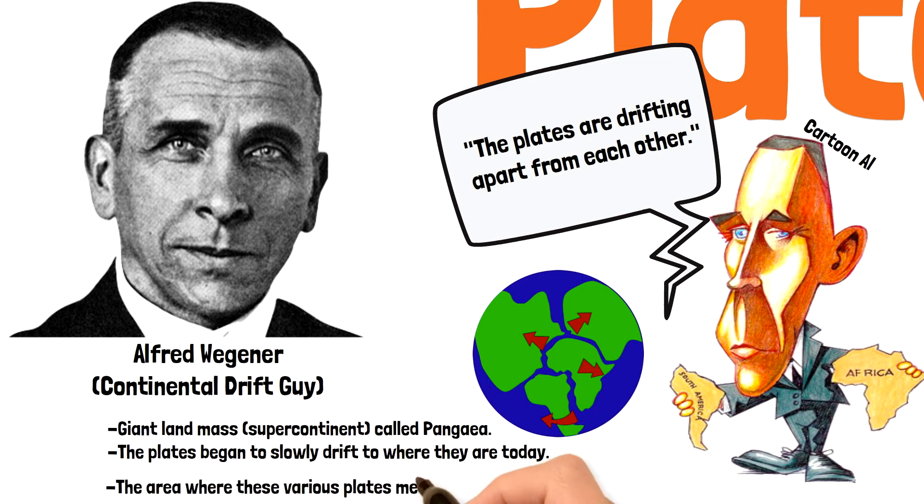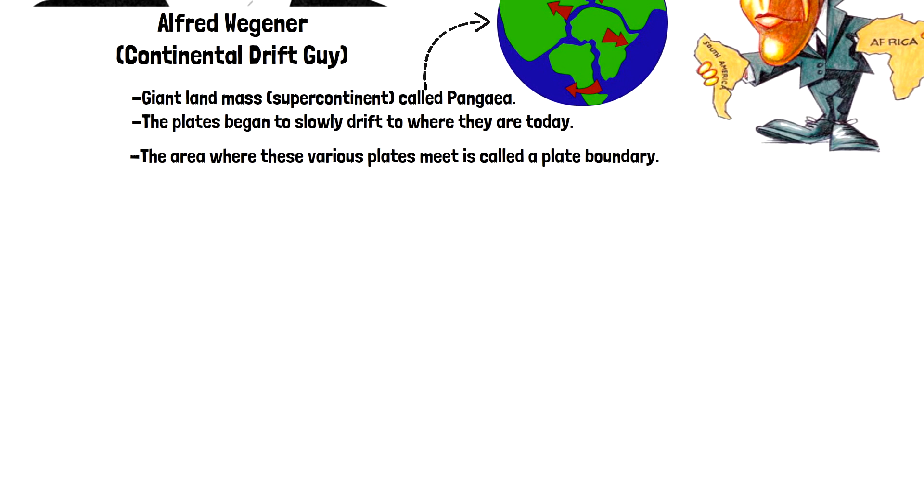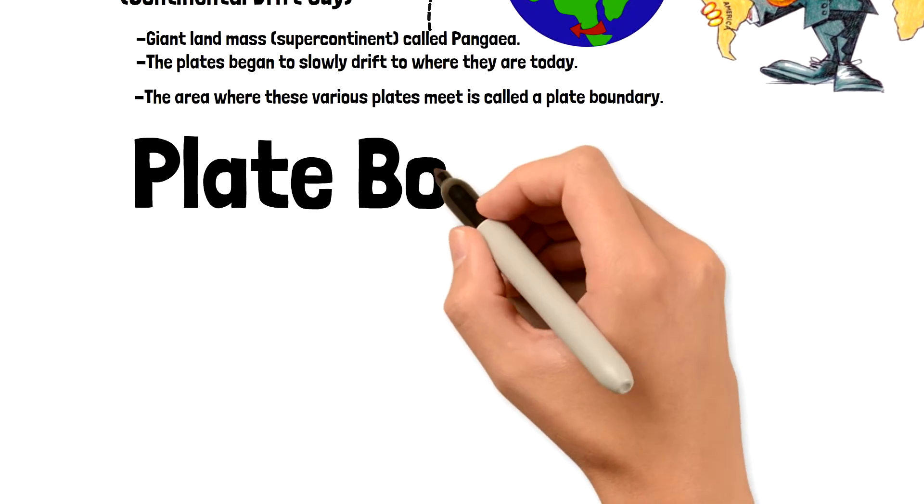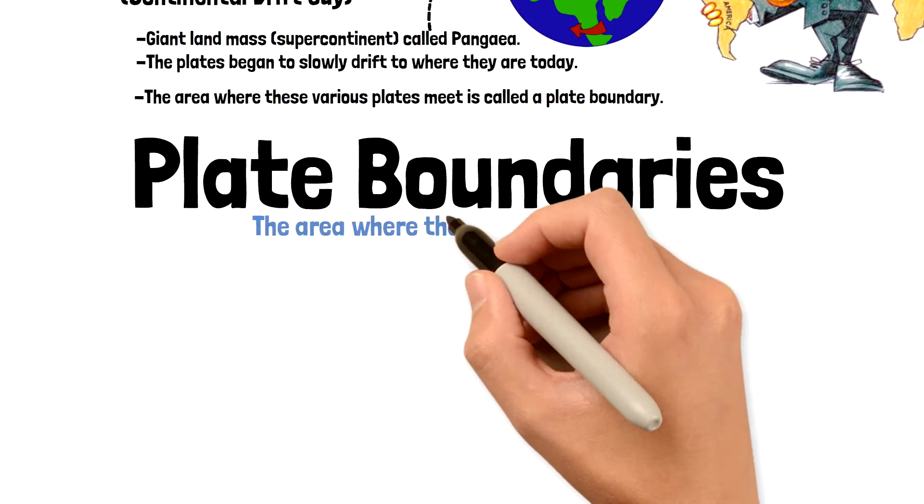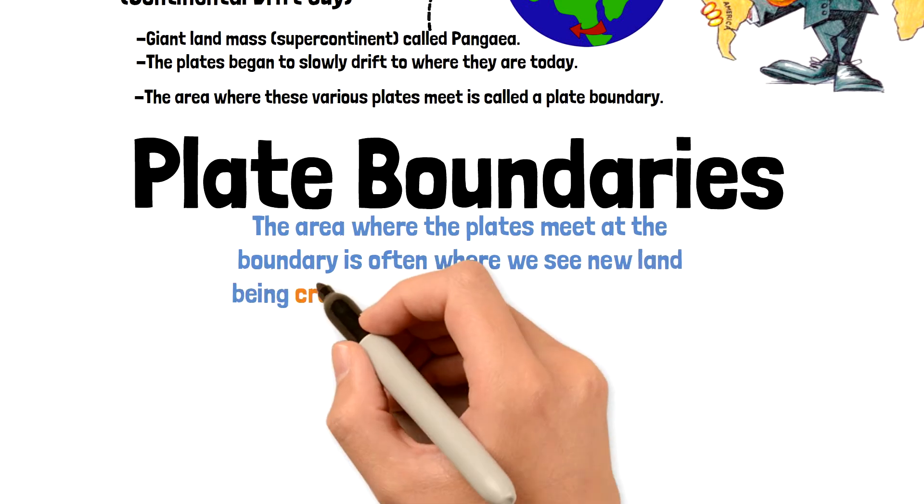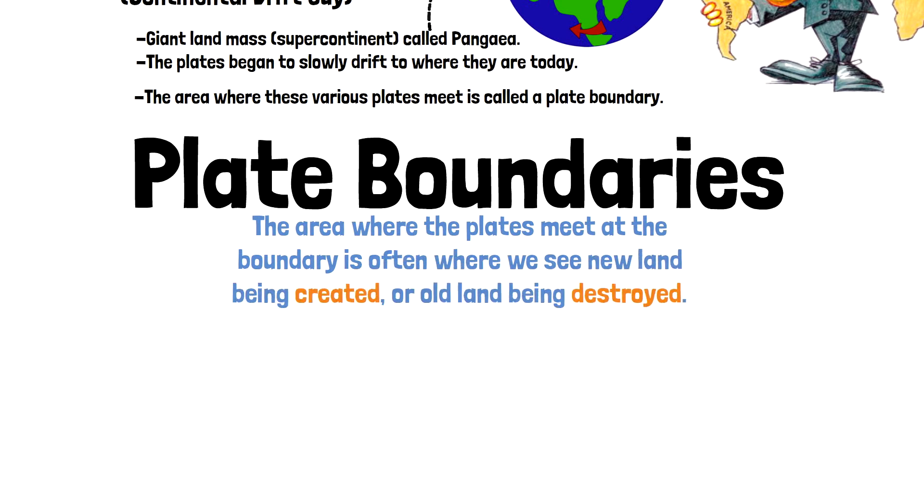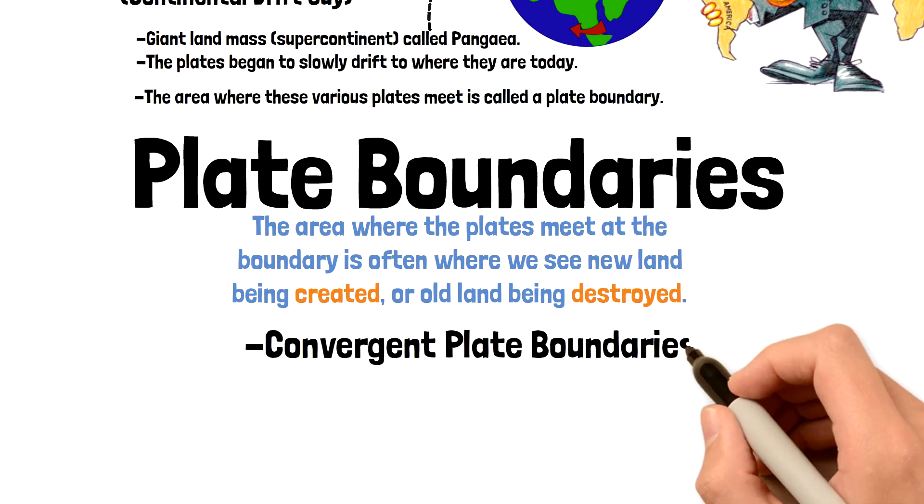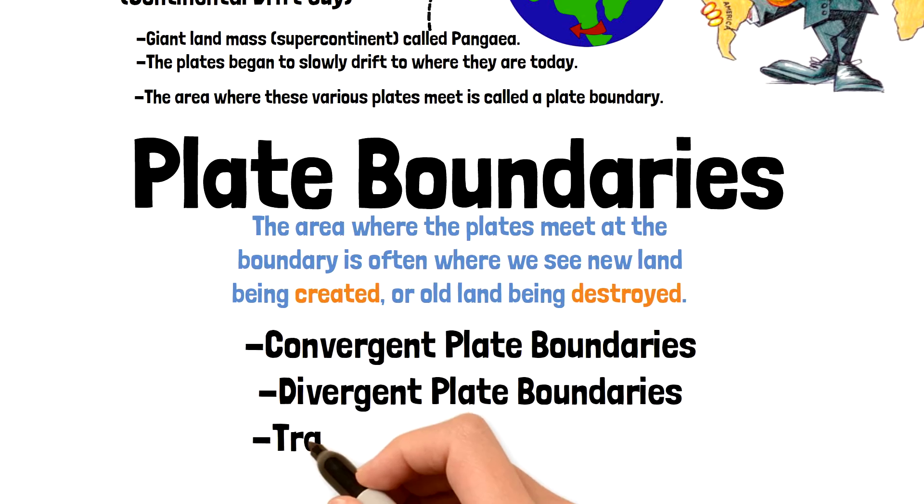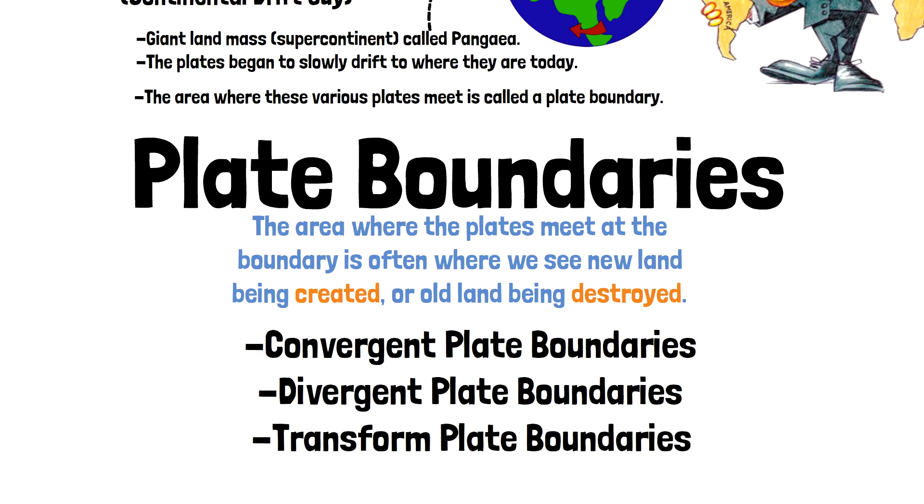The area where these various plates meet is called a plate boundary. This area where plates meet at the boundary is often where we see new land being created or old land being destroyed. The three types of plate boundaries that we will study are convergent plate boundaries, divergent plate boundaries, and transform plate boundaries.